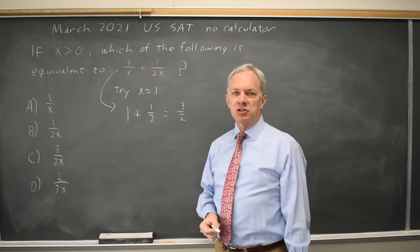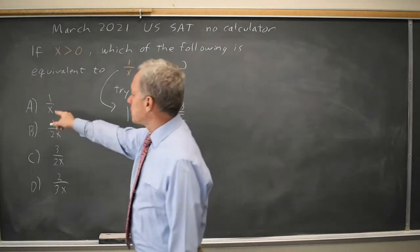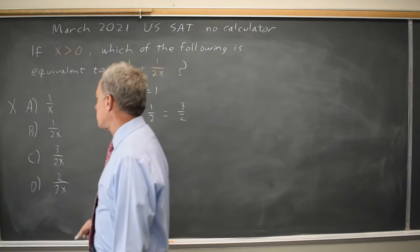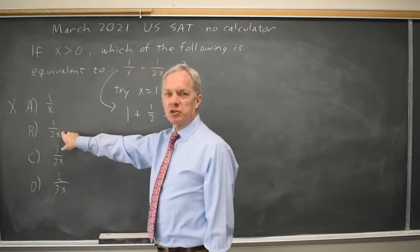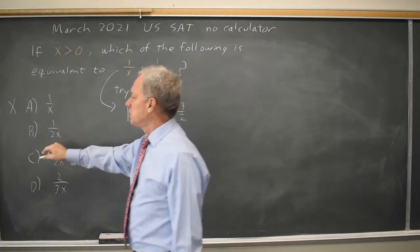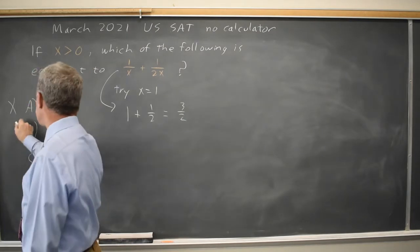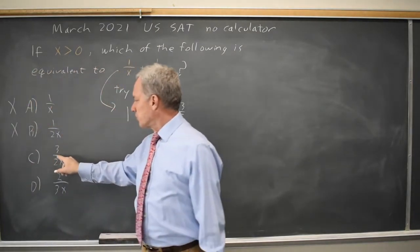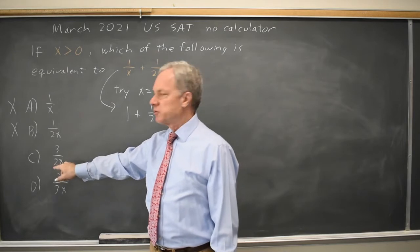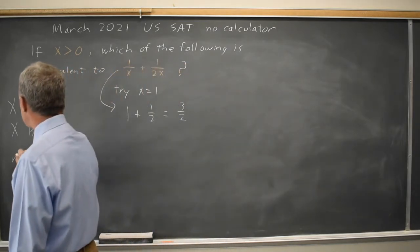Checking each of the answer choices for x equals 1, this gives me 1 over 1 is 1. That's not 3 halves, that's not correct. This gives me 1 over 2 times 1 is 1 half, which is not 3 halves, so that's not correct. This gives me 3 over 2 times 1 is 3 halves, which is 3 halves, so that could be correct.